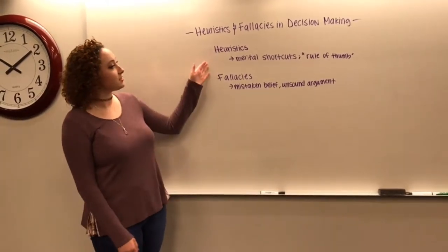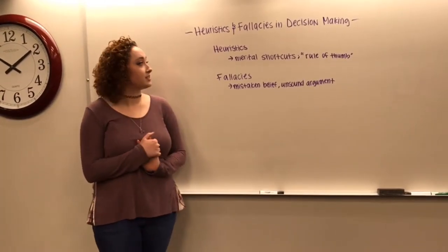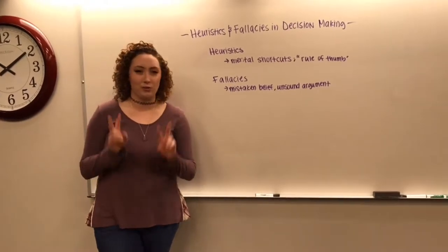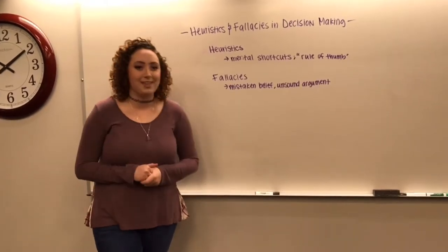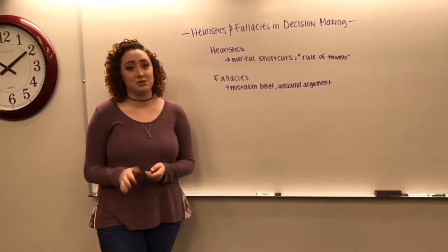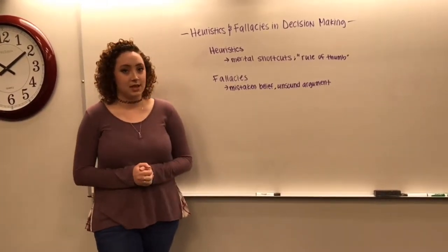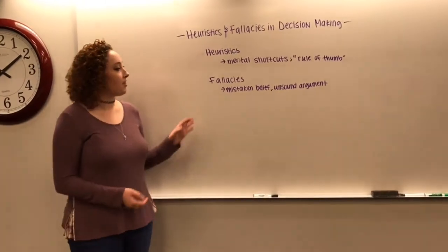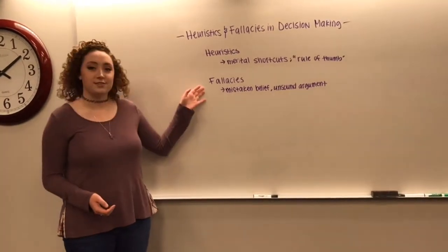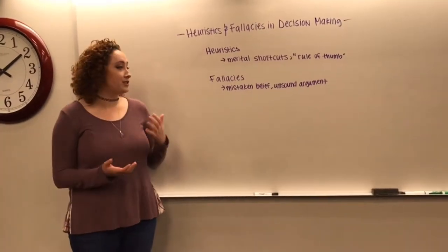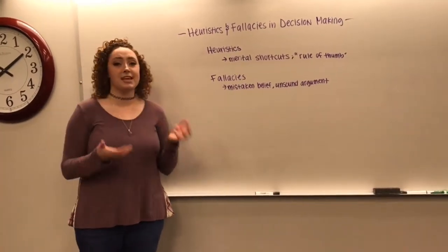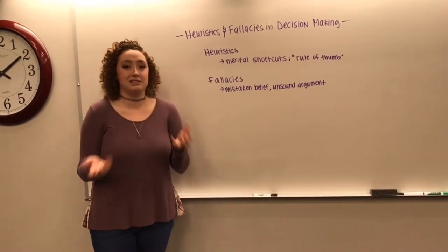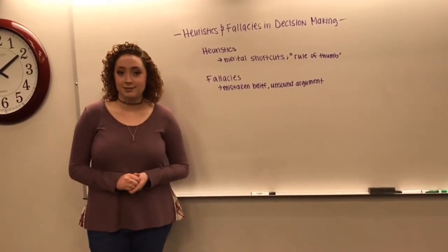So first, there's a heuristic, which is a mental shortcut or a rule of thumb that you can use to make decisions. But these aren't always right. And then second is a fallacy, which is just a mistaken belief, oftentimes based off of an unsound argument.